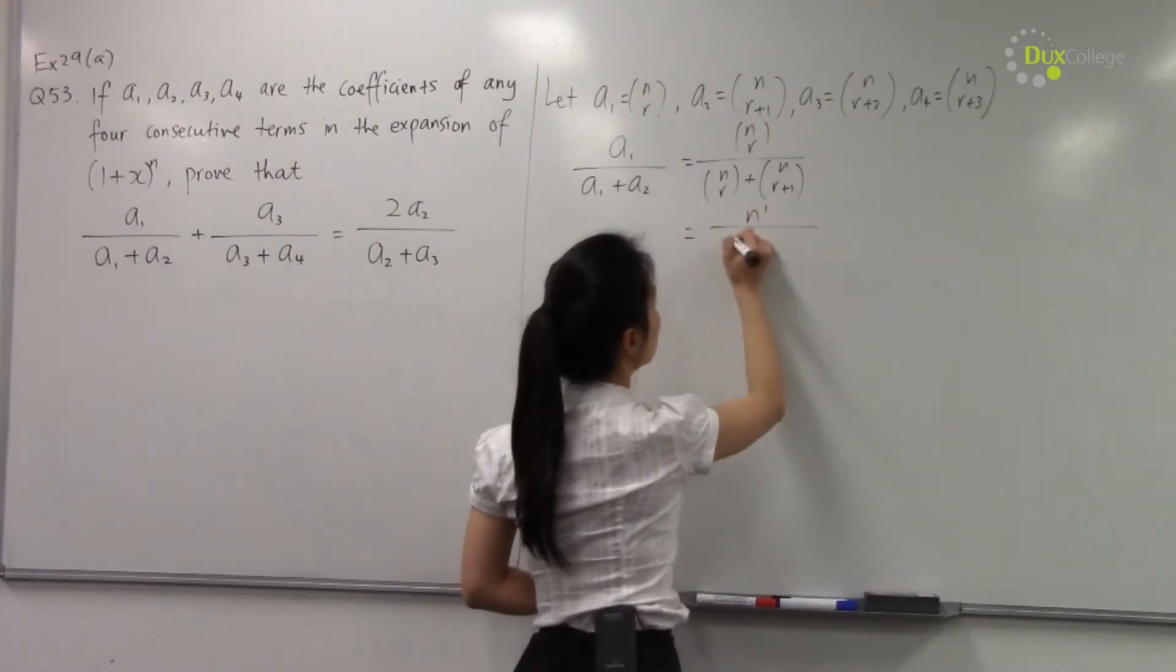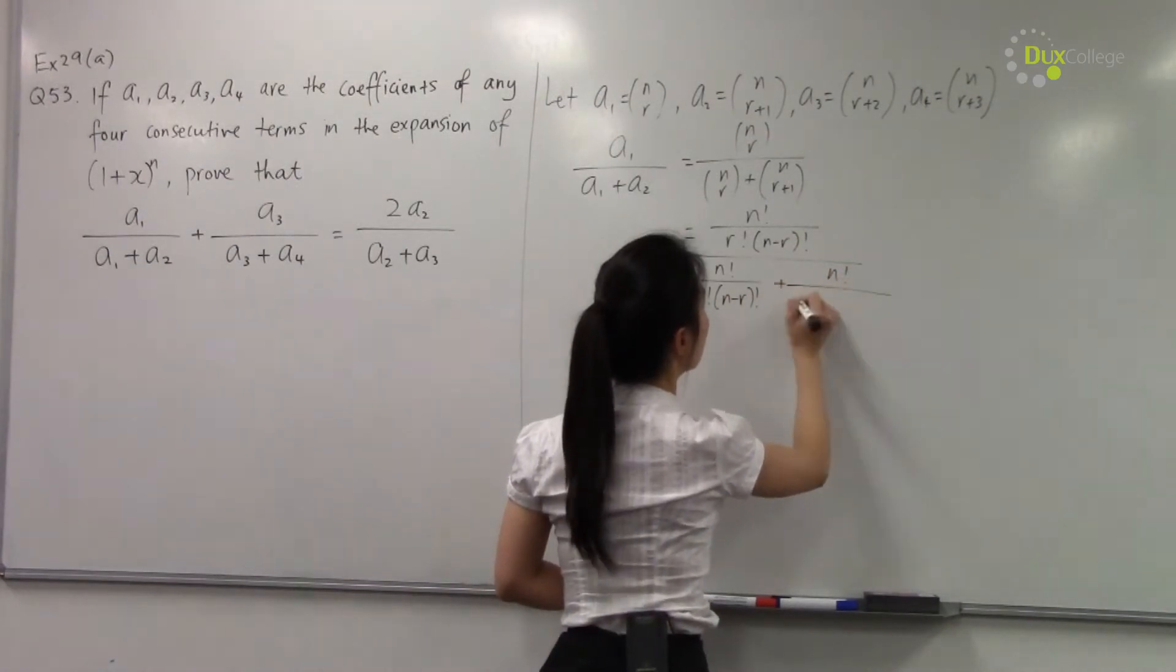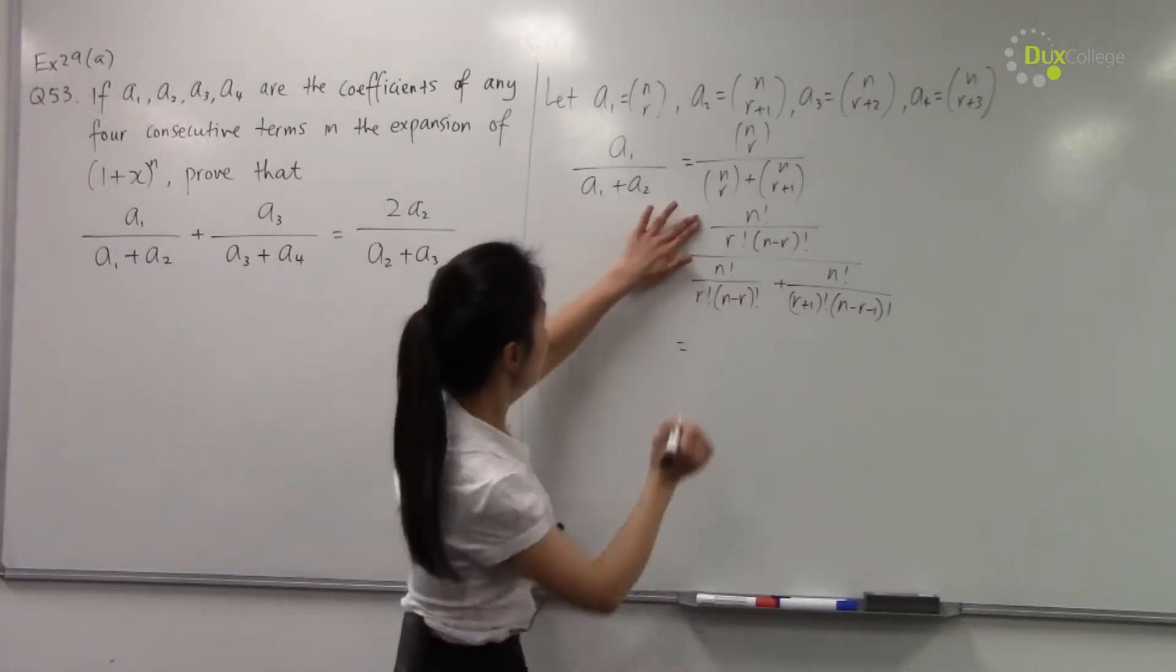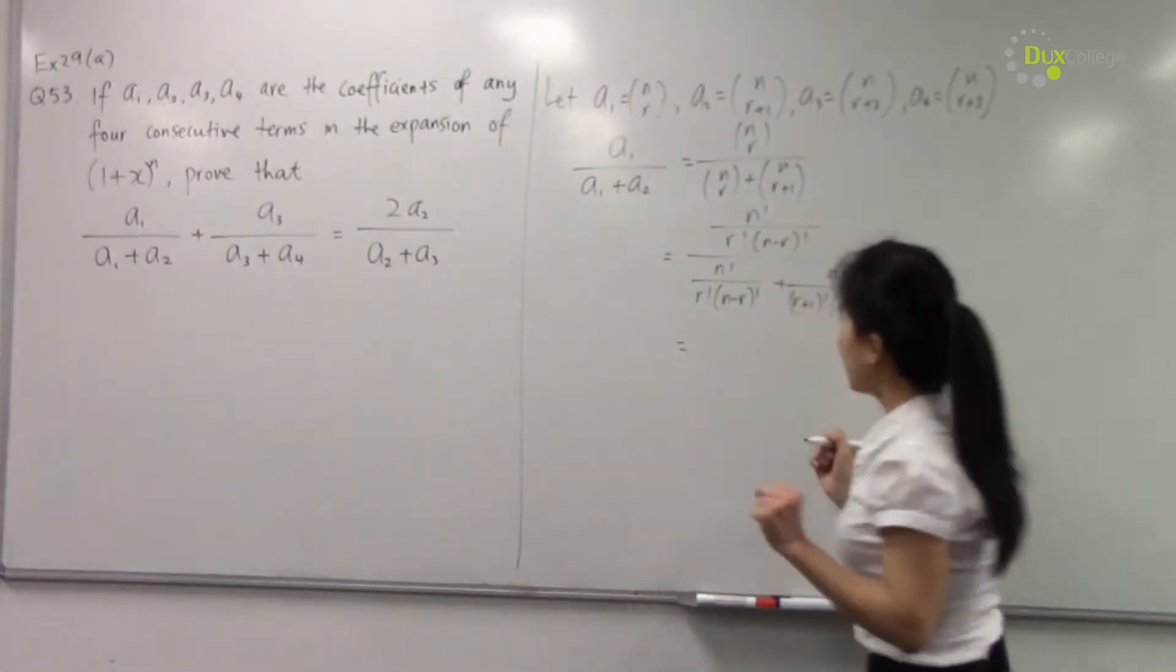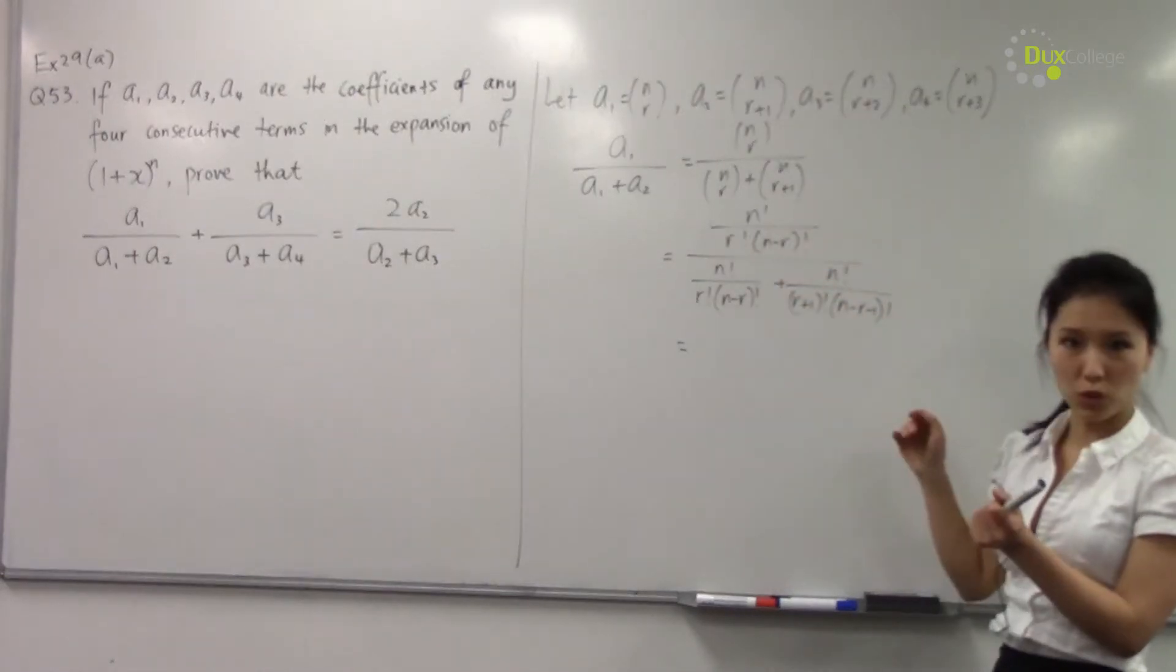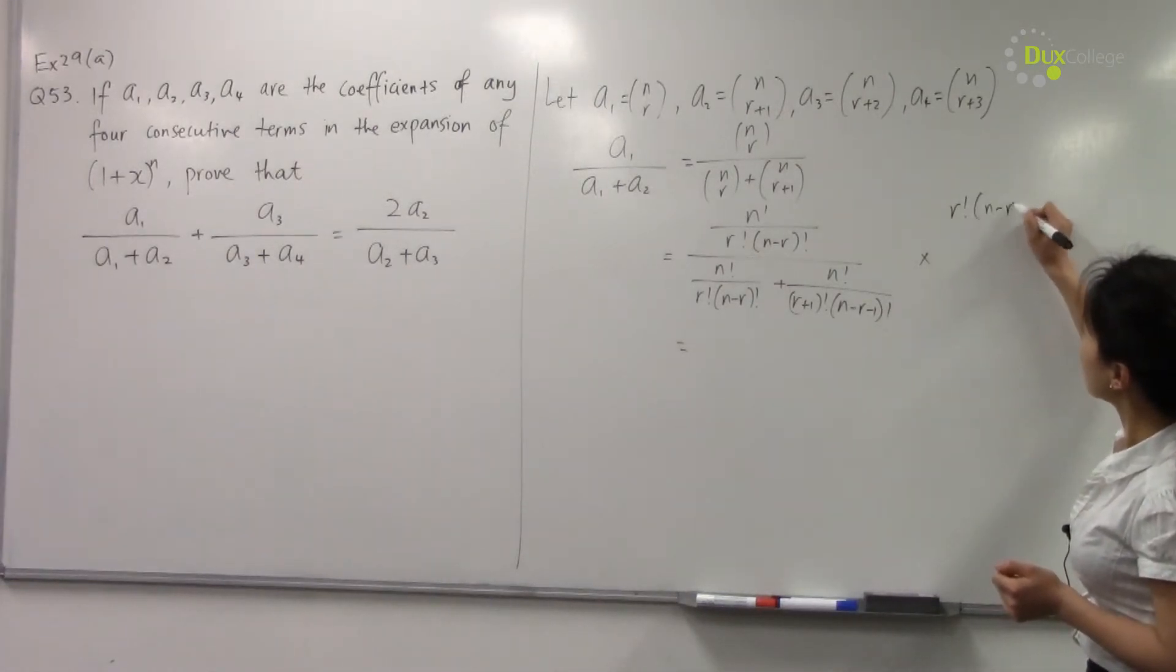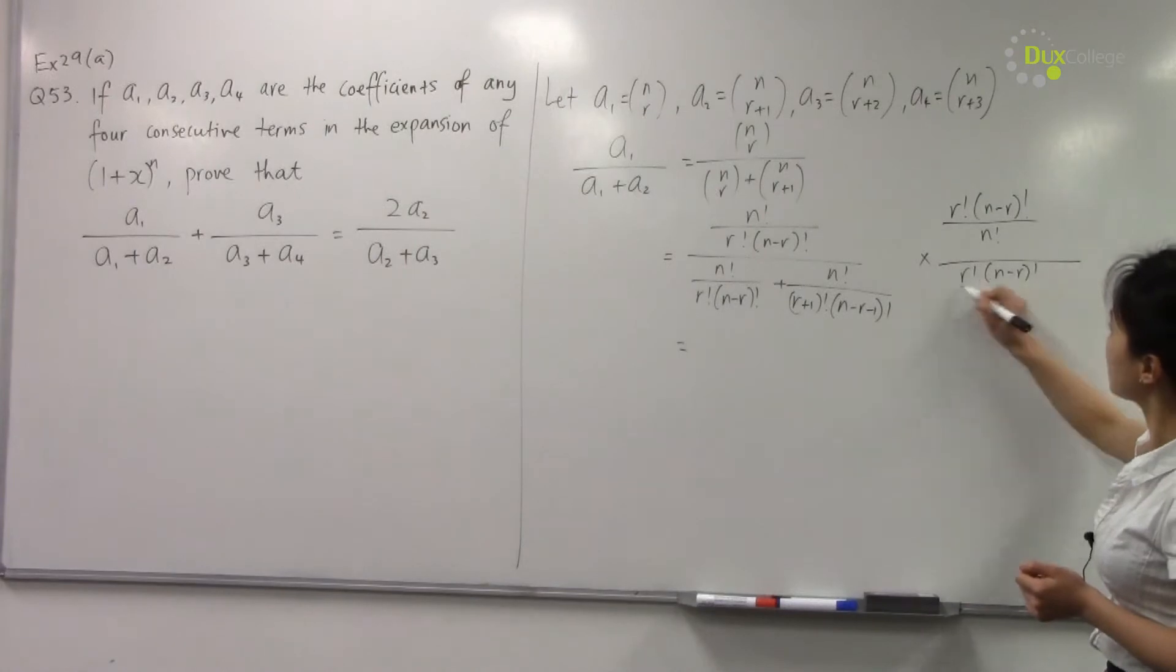If I can expand, we have this ugly chunk here. Now to simplify this, instead of putting the denominator under the same denominator and then taking out common factors and canceling with the numerator, what we're going to do in a much quicker way is multiply top and bottom by r factorial times (n-r) factorial over n factorial. So this is a much quicker way of simplifying this.